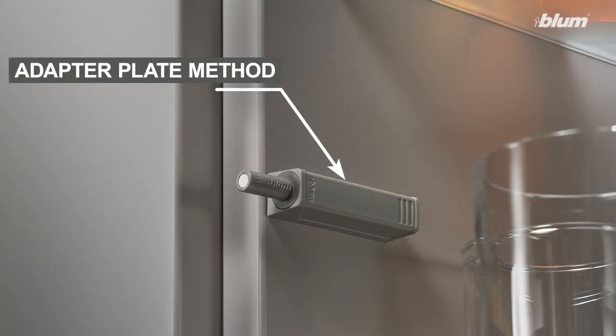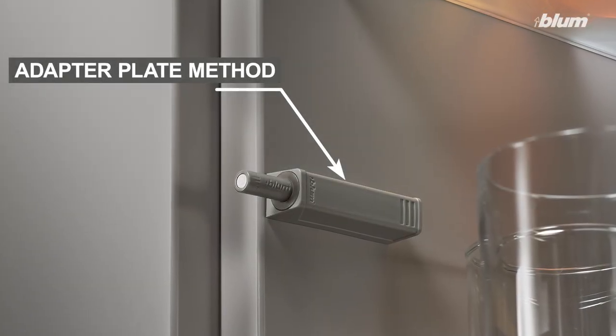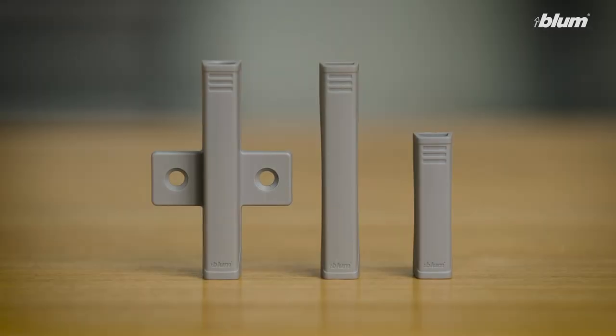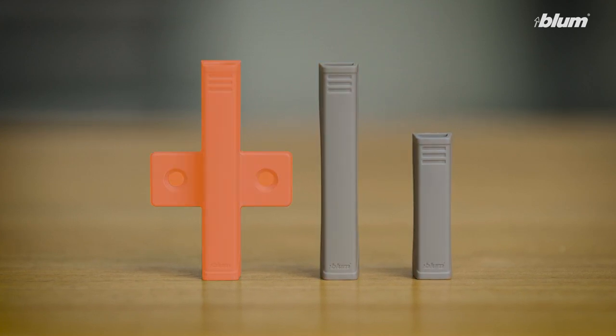The second method for installing your Tip-On unit is by using an adapter plate. There are three types of adapter plates: inline plates for standard doors, inline plates for large doors, and wing plates for large doors.